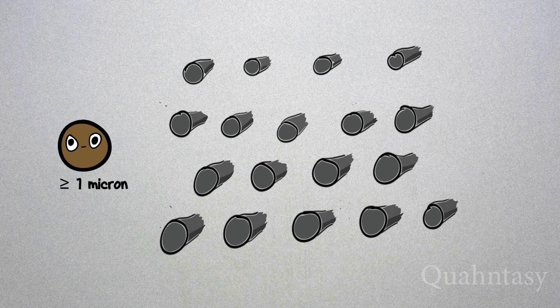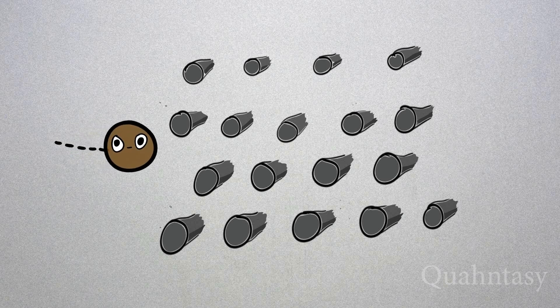Particles of 1 micron or larger in size basically travel in straight lines because of their inertia, and because there are many layers of fibers they are bound to hit a fiber and stick.